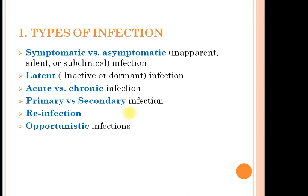Acute infection is the infection which has just appeared as a result of the growth and multiplication of the pathogen — the symptoms are just seen. Chronic infection, on the other hand, is an infection which lasts for a very long duration — for weeks, for months, sometimes even for a year. It is a long-lasting infection.